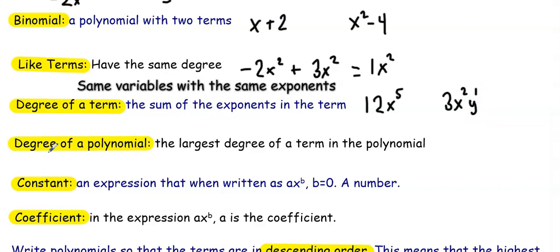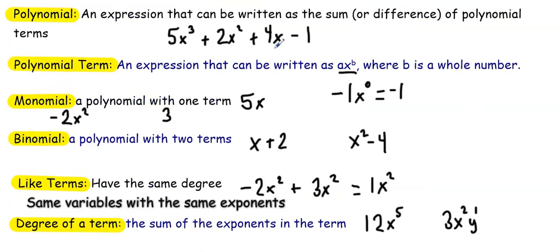The degree of a polynomial is the largest degree of a term within the polynomial. So for example, if we look at this polynomial here, the degree of the polynomial is 3 because this term has a degree of 3. This term has a degree of 2. This term has a degree of 1. This last term has a degree of 0.